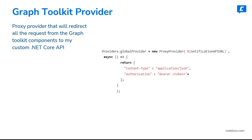The Graph Toolkit provider: in order to implement Microsoft Graph Toolkit components, you need a valid provider, which can be of different flavors. In my case, I'm using a proxy provider, passing my API URL — which is the .NET Core API hosted on Azure App Service. The reason for using a proxy provider is it gives more control over things where there are threshold limits imposed on Microsoft Graph calls. By routing all traffic to my custom API, I can control requests and serve them with different caching mechanisms implemented in my .NET Core API.